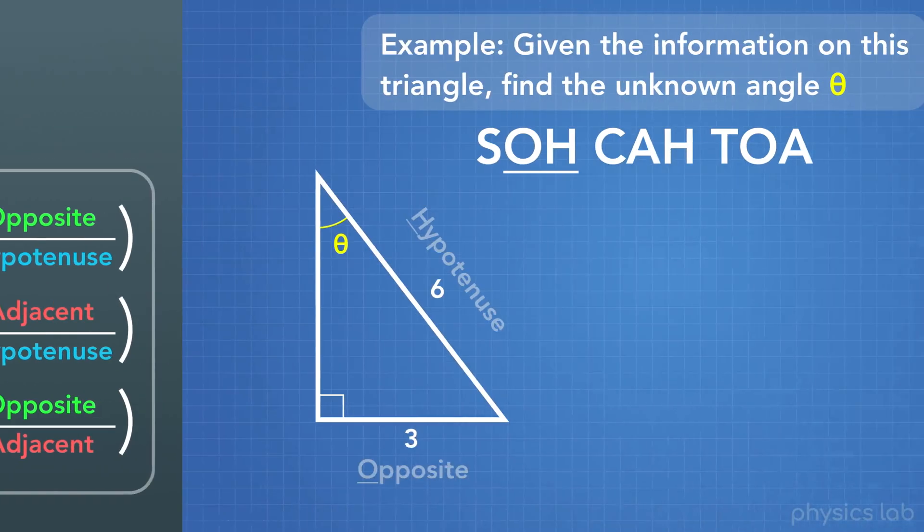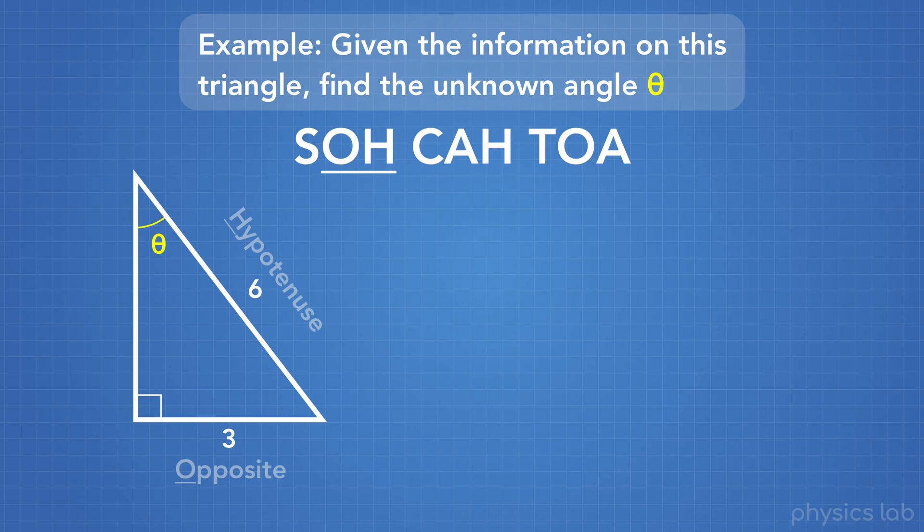Cool, so now we can finish our problem. We're still dealing with sine since we have opposite and hypotenuse, but since we want to find the angle, we're going to use the inverse sine function. In this case, we plug in 3 for the opposite side length, and 6 for the hypotenuse side length.